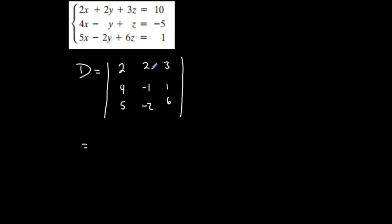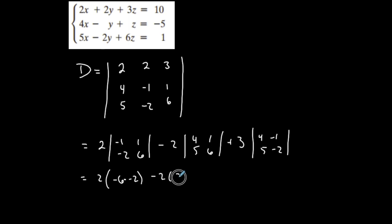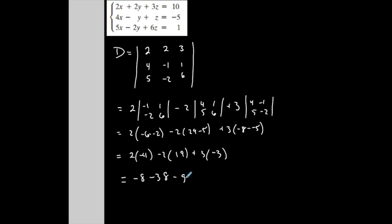This is a 3 by 3, so I have to go through the process. Going across row 1: 2 times the corresponding 2 by 2 determinant — negative 1, 1, negative 2, 6 — minus 2 times its leftover: 4, 5, 1, 6 — plus 3 times its leftover. The pattern is plus, minus, plus. Simplifying: 2 times negative 4, minus 2 times 19, plus 3 times negative 3. This gives negative 8 minus 38 minus 9, which equals negative 55. So D equals negative 55.